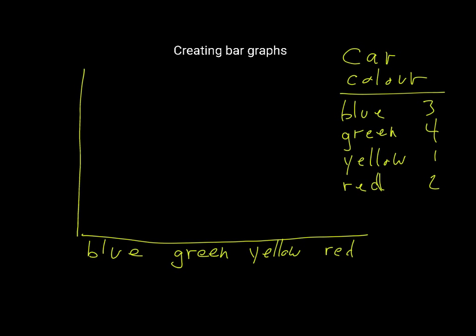Are we going to count up in steps of one like one, two, three, four, five, or go up in steps of two like two, four, six, eight? Because our biggest number is four, we could probably just go up in steps of one. So zero is here.